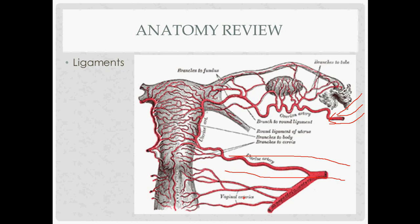The uterosacral ligament connects the uterus posteriorly back to the sacrum. The uterosacral and cardinal ligaments combine to form the uterosacral complex, which attaches to the wall of the uterus. The round ligament is a remnant of the gubernaculum and heads toward the labia majora. The utero-ovarian ligament connects the uterus to the ovary.